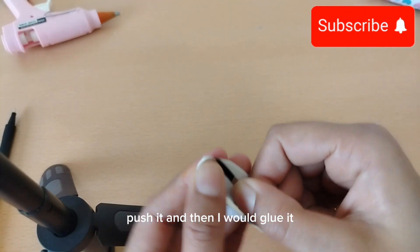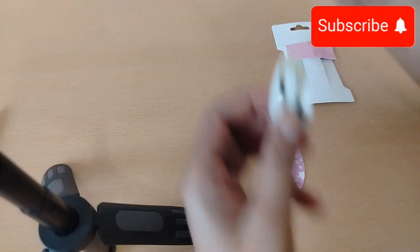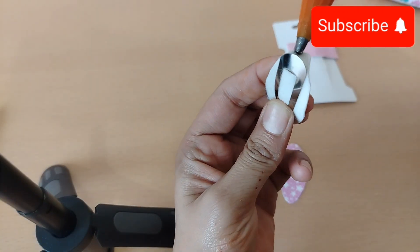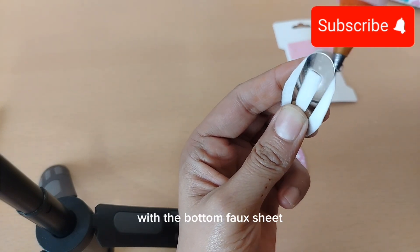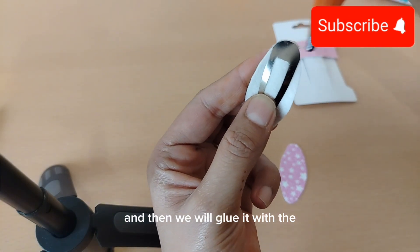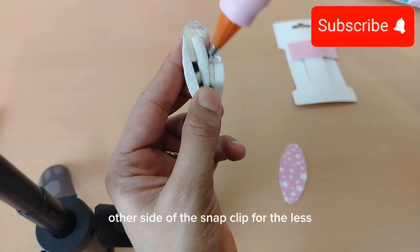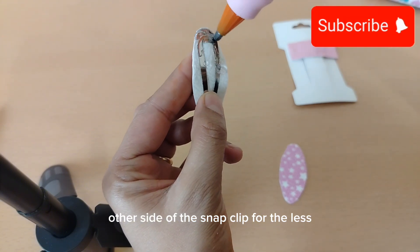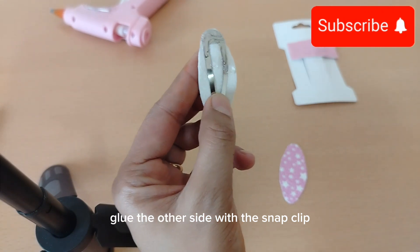Now we will glue this snap clip with the bottom fox sheet, and then glue the other side of the snap clip.